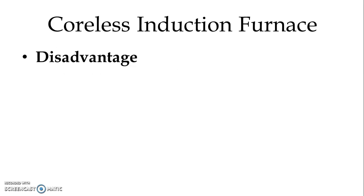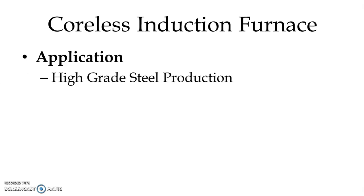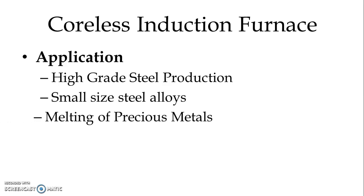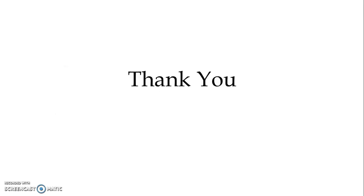There is one disadvantage: initial or capital cost is very high. Regarding application, because of its excellent temperature control and uniform mixing, the Coreless type Induction Furnace can be used for high-grade steel production, for small size steel alloys, and for melting of precious metals. For melting precious metals, we always use the Coreless type Induction Furnace. Thank you for watching.